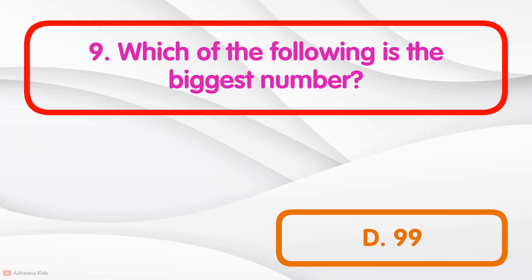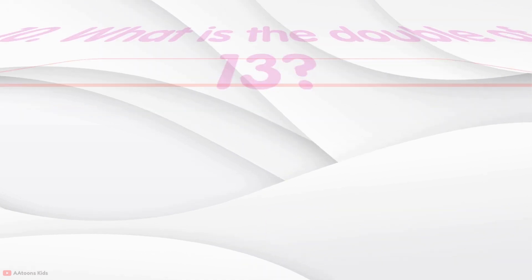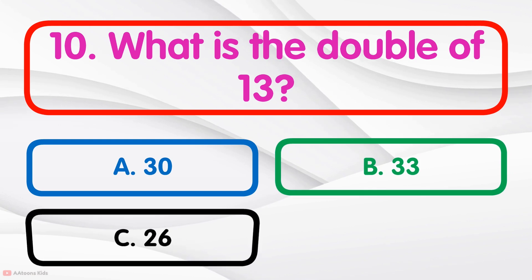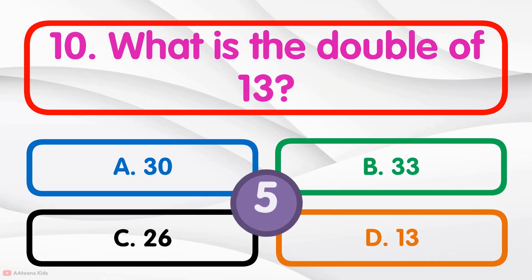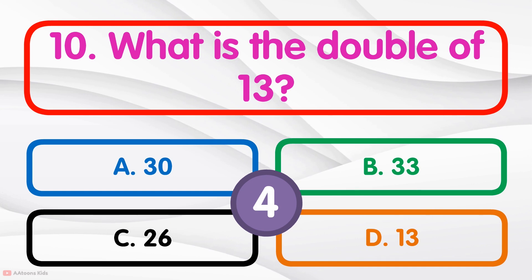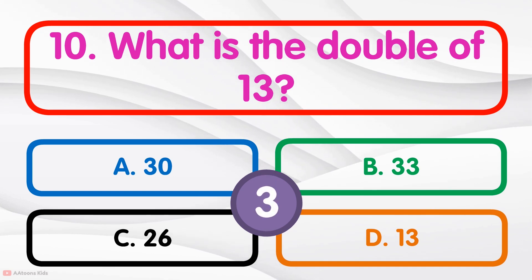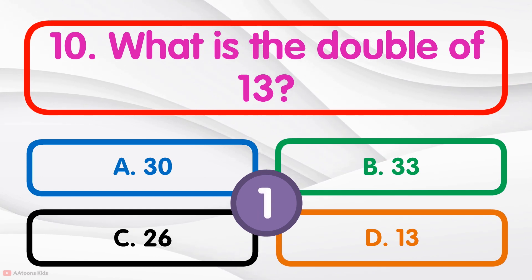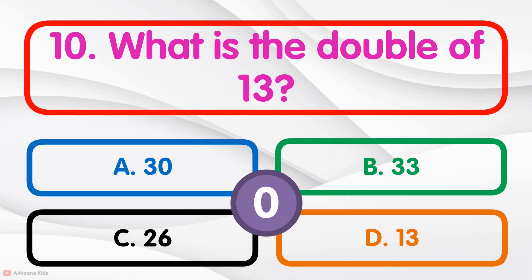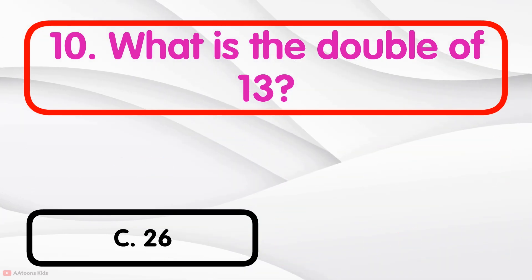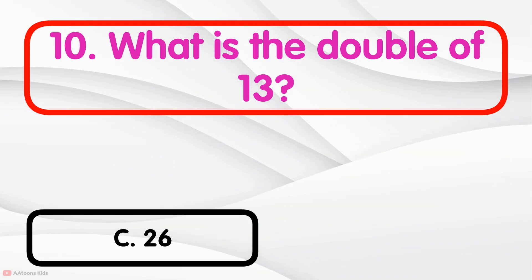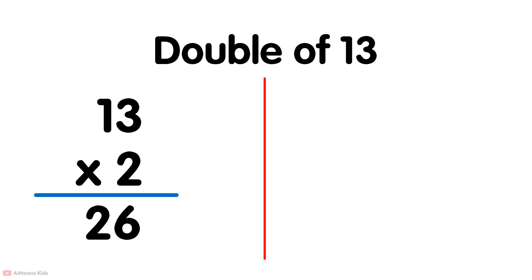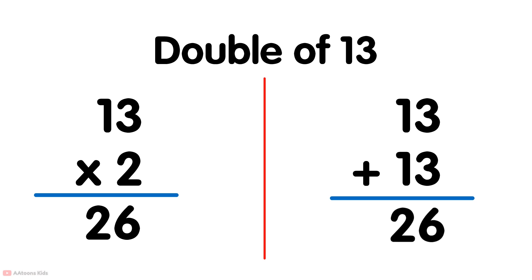99 is the biggest number. What is the double of 30? 60 is the double of 30. To double any number, simply multiply the number by 2, or add the number to itself.